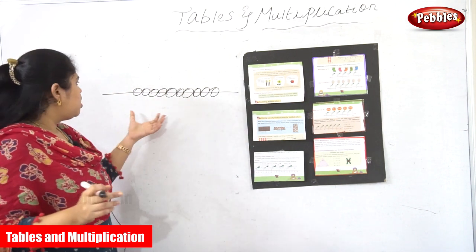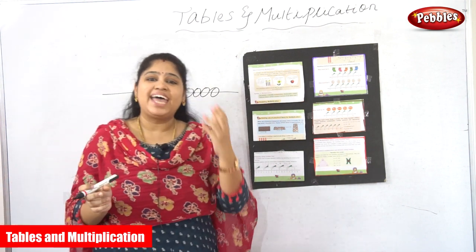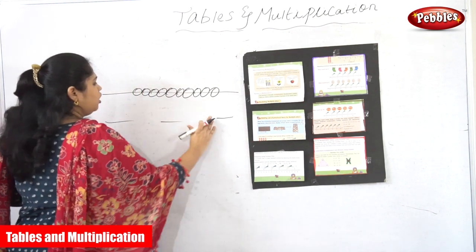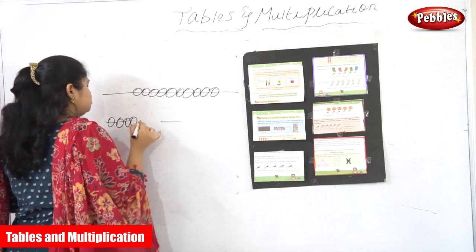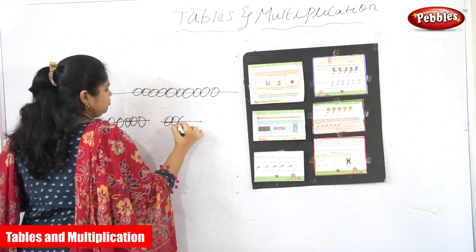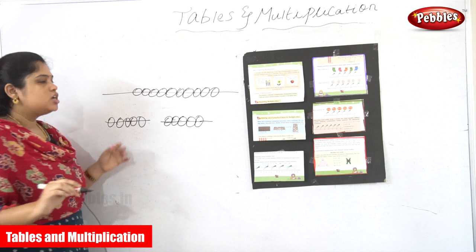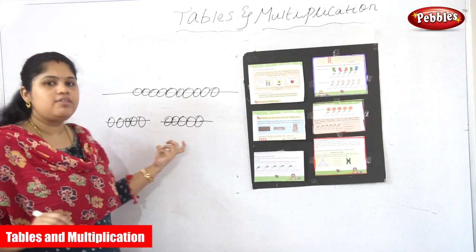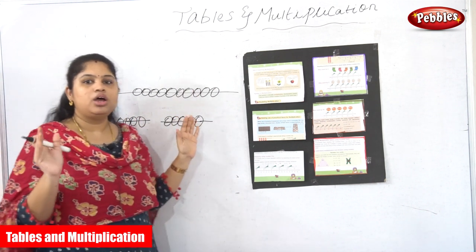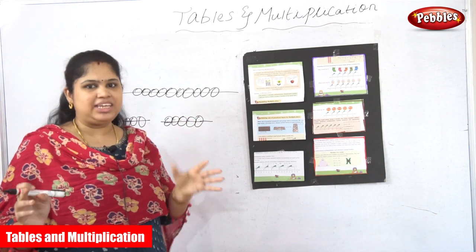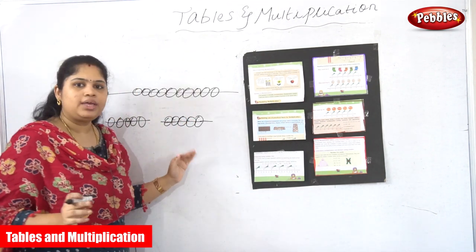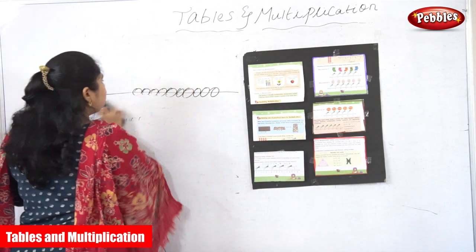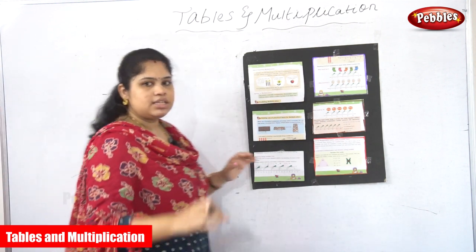When you put 10 beads together it is not as easy to count as grouping. Grouping means — instead of 10 beads in one thread, if you divide them as 5 and 5, it is easy to count. This is called grouping. Grouping helps us count very easily without any confusion. So this is how grouping helps make our counting easy.